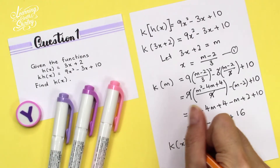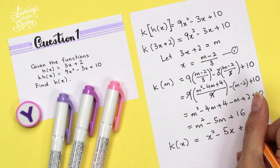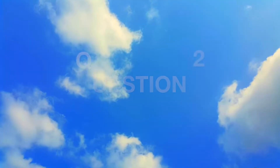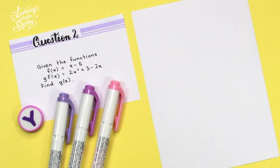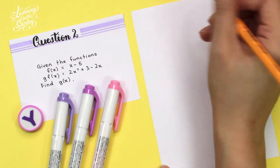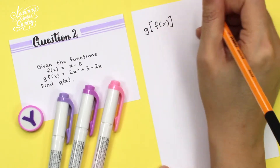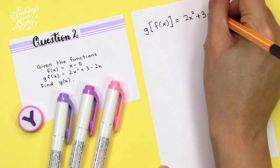For question 2, given the function f(x) = x - 5 and g(f(x)) = 2x² + 3 - 2x, find g(x). First of all, we write down the g(f(x)) given: g(f(x)) = 2x² + 3 - 2x.